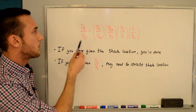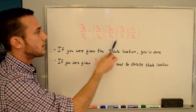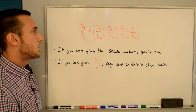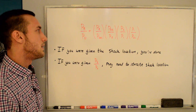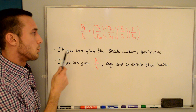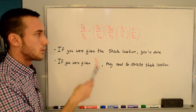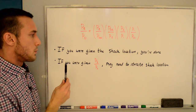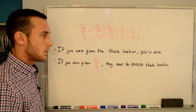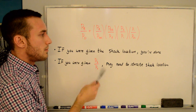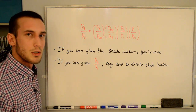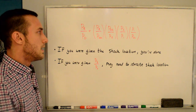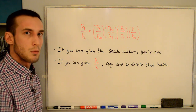PE/P0 is found by multiplying those four pressure ratios together, which also equals PB/P0 since PE equals PB. If you were given the shock location, you're done — this is the final ratio. However, if you were given PB/P0 = 0.5 as in our case, you may need to iterate on the shock location unless you happened to guess the correct one initially.